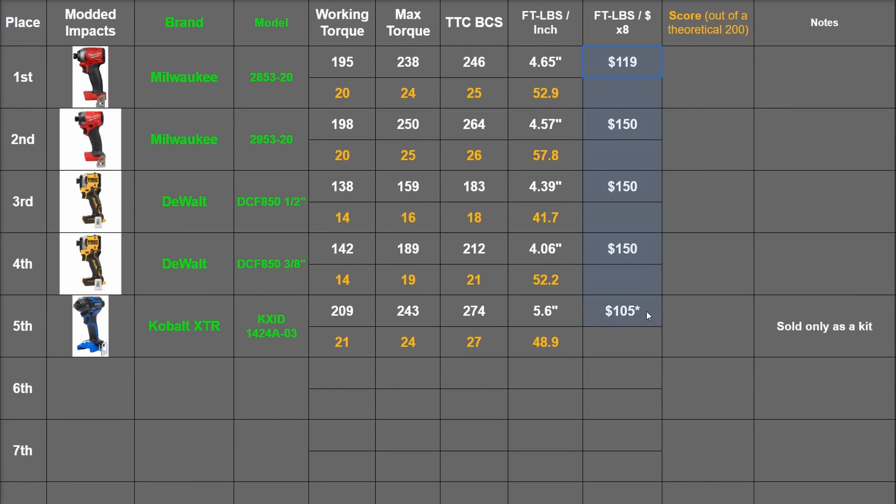As a function of power and price, that's 16.5 for the now affordable Gen 3, 14.1 for the Gen 4, only 9.8 for the half-inch DCF 850 - those are pricey tools looking at the power alone - then 11.3 and the best of the bunch, 20.9 for the Cobalt.